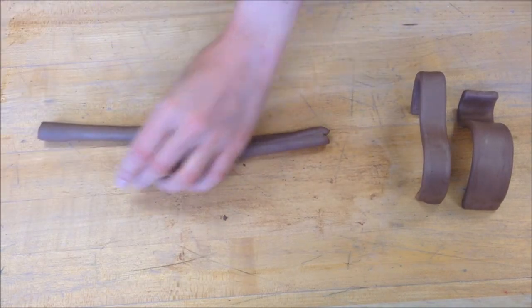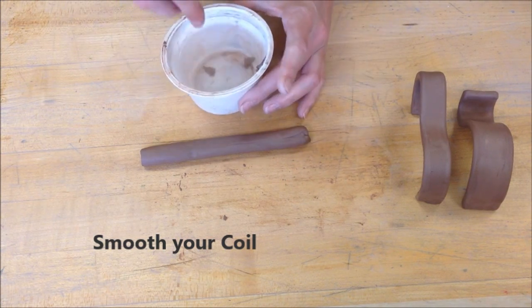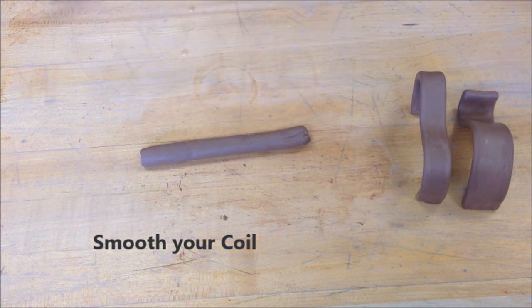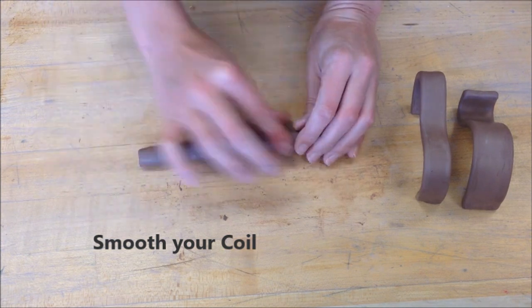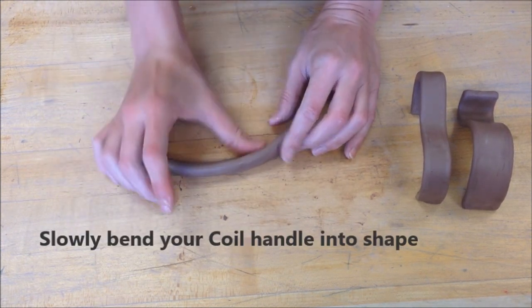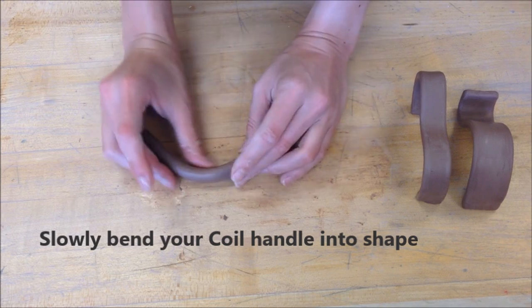When you're happy with your coil, don't forget to smooth out any tiny cracks there as well. Again, you don't want to make that coil slimy. Just the tiniest bit of water will do. Then you can slowly bend your coil handle into shape.